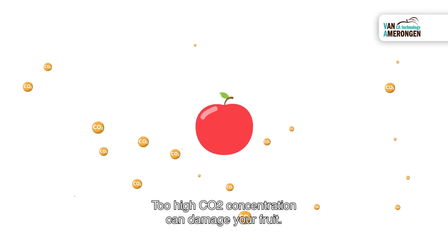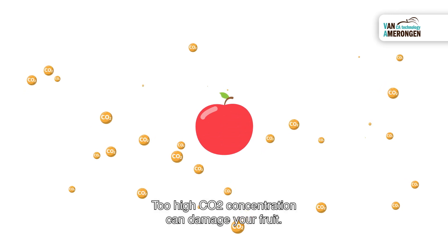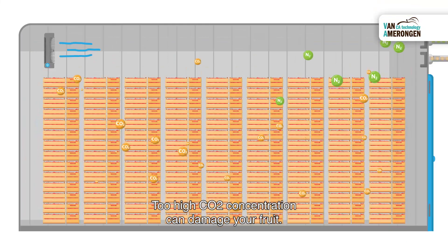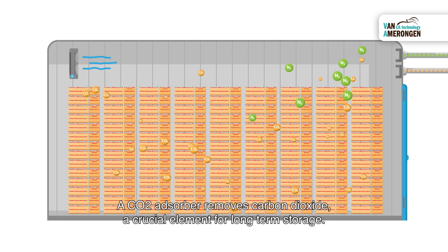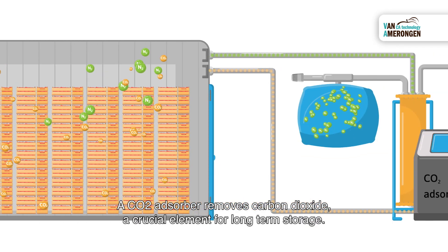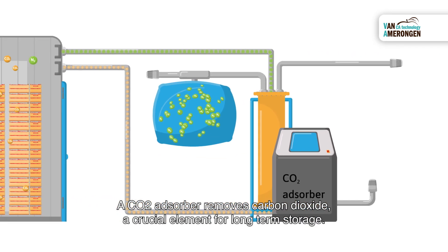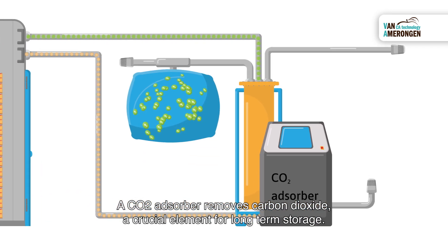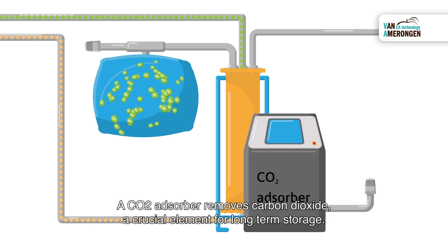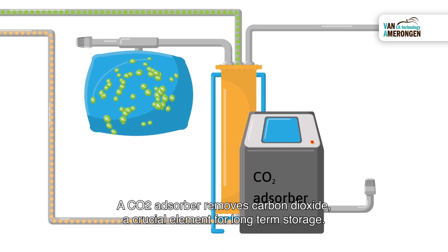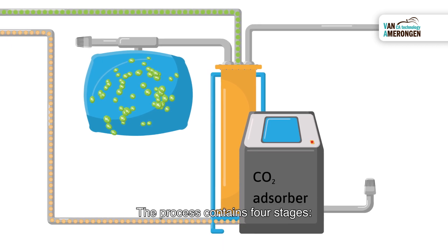Too high CO2 concentration can damage your fruit. A CO2 adsorber removes carbon dioxide, a crucial element for long-term storage. The process contains four stages.